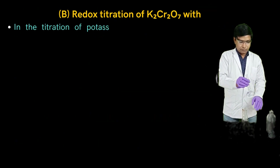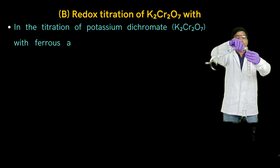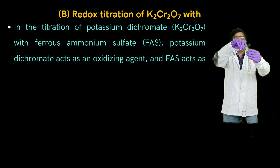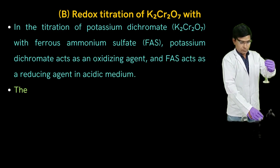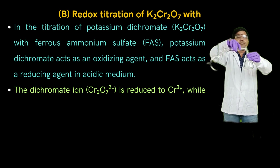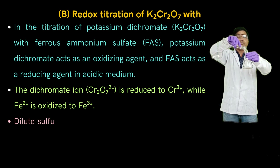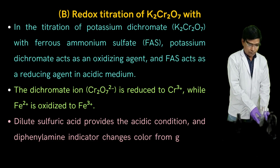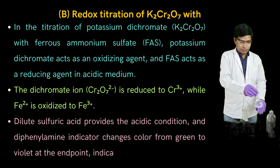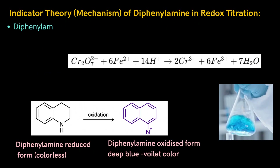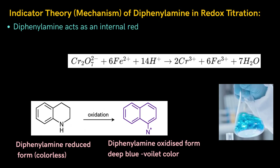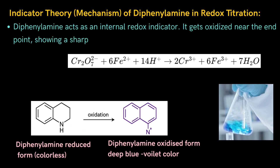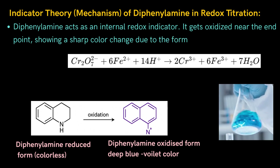The second type of redox titration requires an indicator. In the titration of potassium dichromate (K2Cr2O7) with ferrous ammonium sulfate (FAS), potassium dichromate acts as an oxidizing agent and FAS acts as a reducing agent in acidic medium. The dichromate ion Cr2O7²⁻ is reduced to Cr³⁺ while Fe²⁺ ion is oxidized to Fe³⁺ ion. Dilute sulfuric acid provides the acidic condition, and diphenylamine indicator changes color from green to violet at the endpoint. Diphenylamine acts as an internal redox indicator; it gets oxidized near the endpoint, showing a sharp color change due to the formation of a blue-colored radical cation.